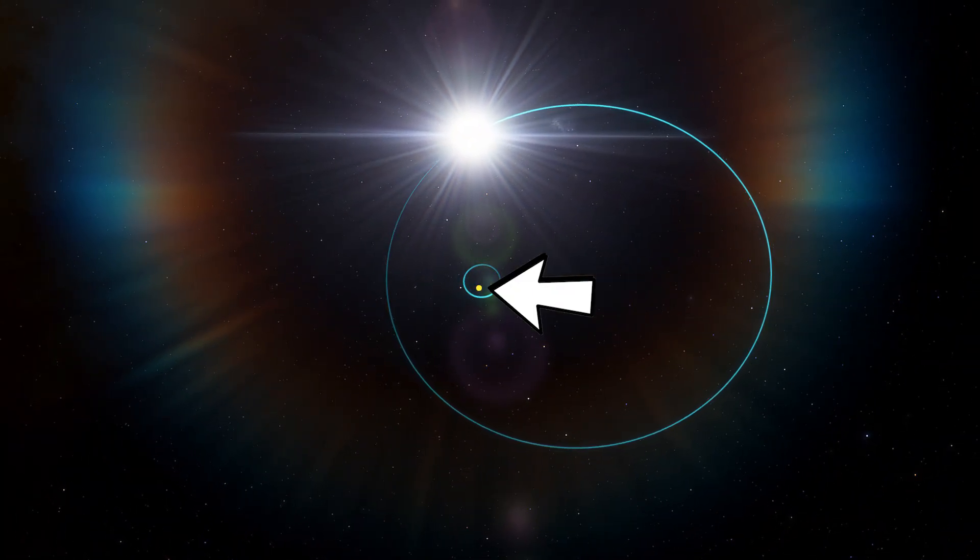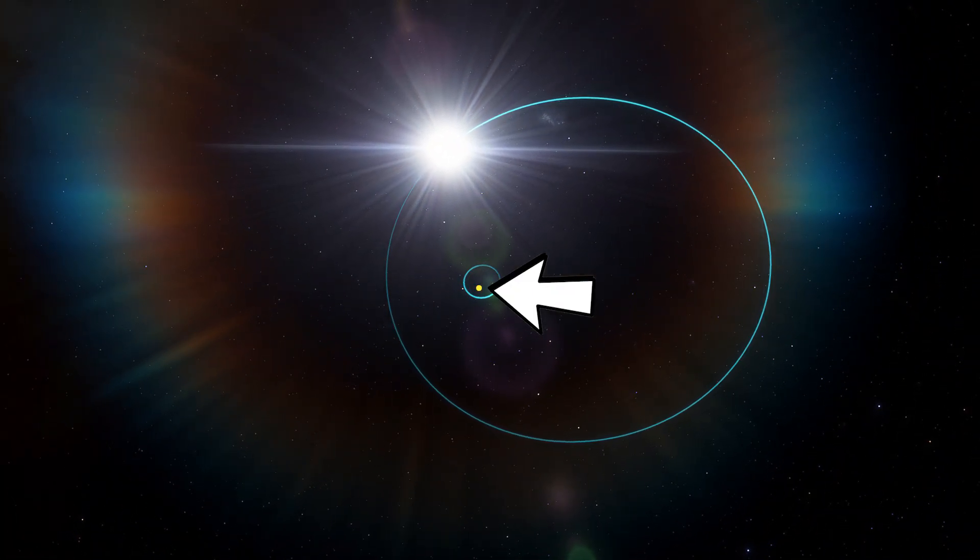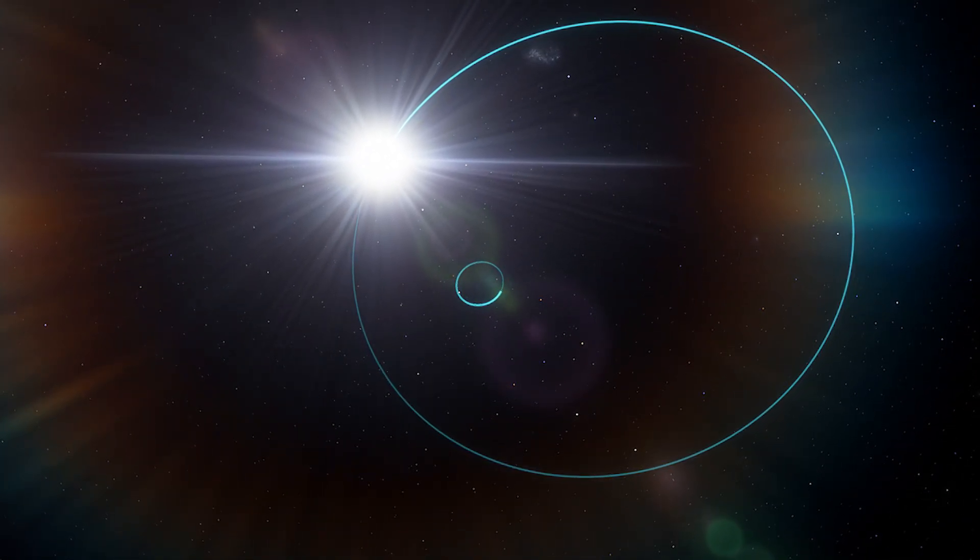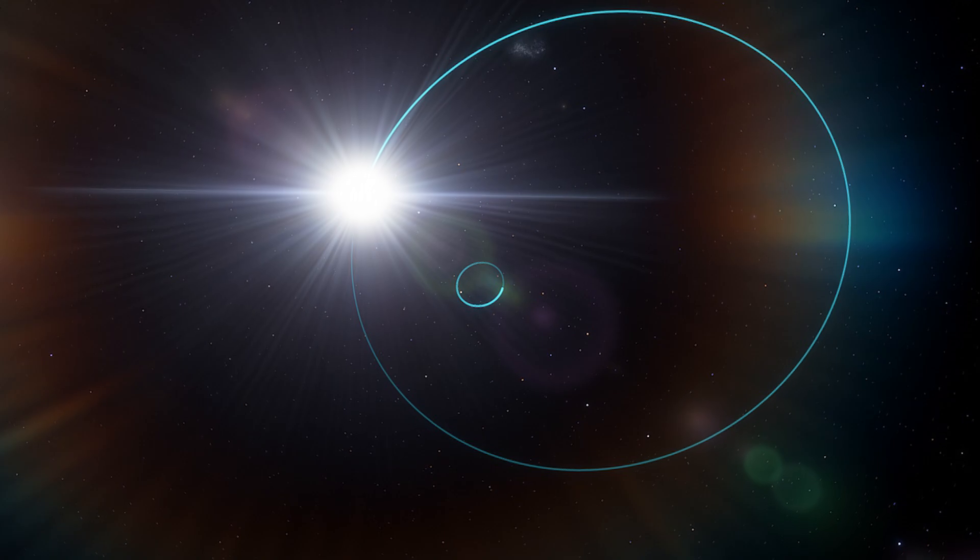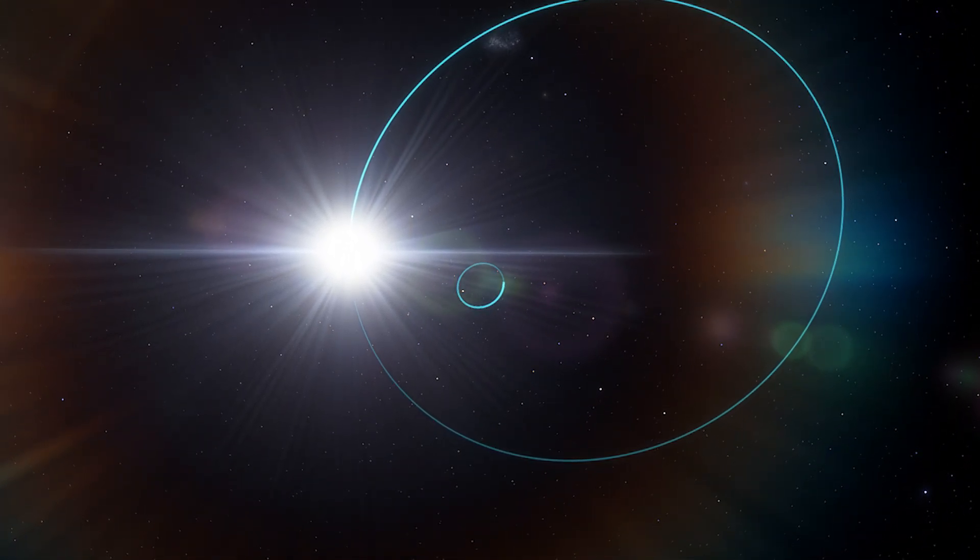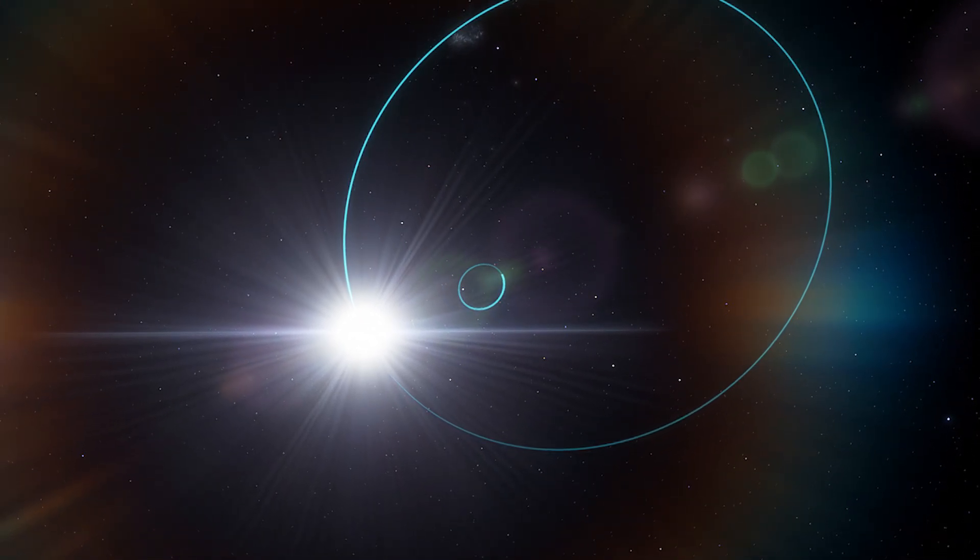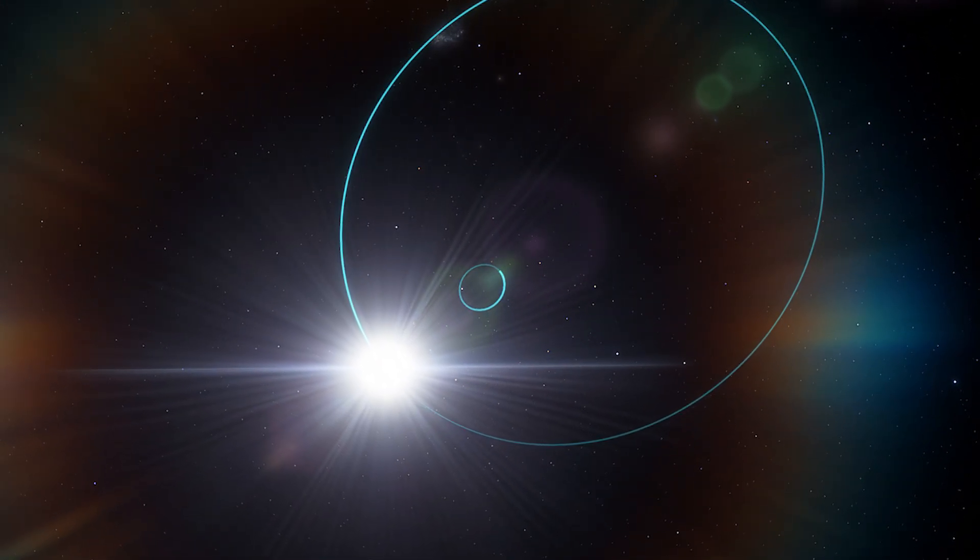They determined the star orbited the system's center of mass about once every 186 Earth days. If the unseen object were a star, it would be far brighter than its companion and therefore easier to see. But there was no indication of a second star in the system. This made the case of a black hole even stronger.